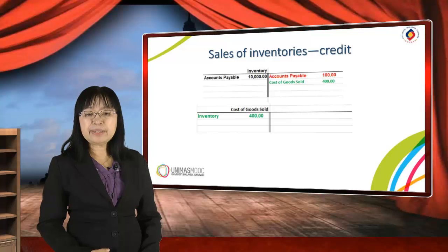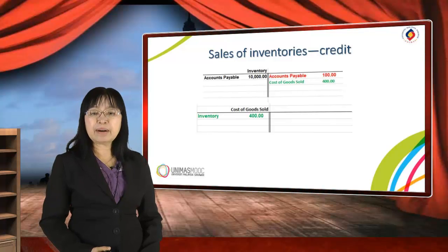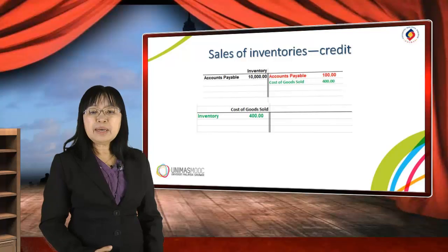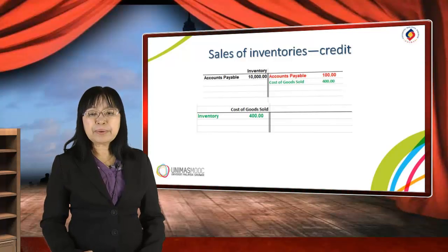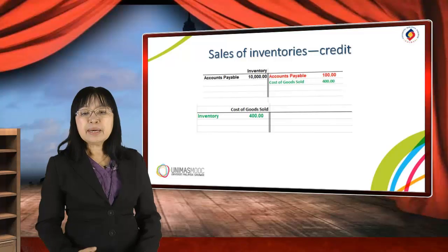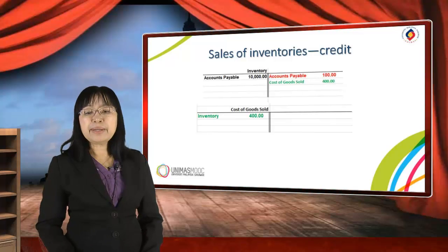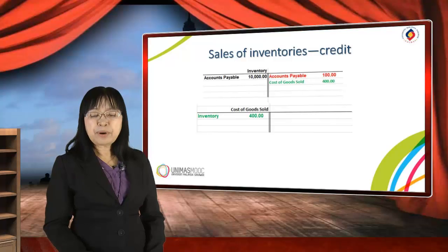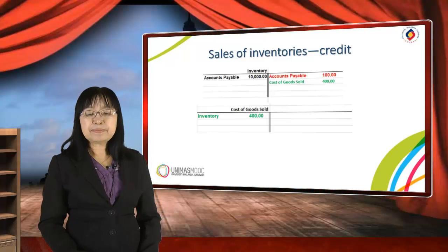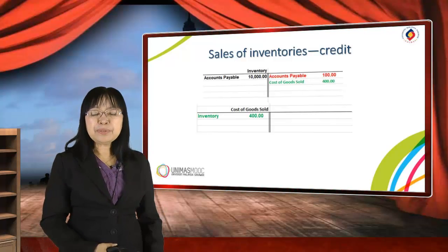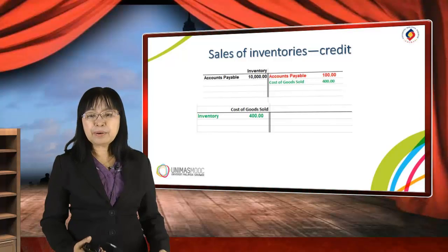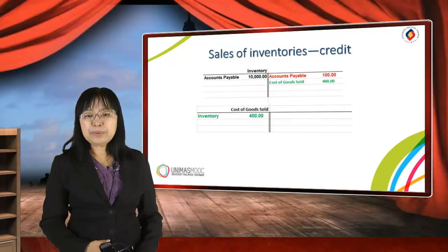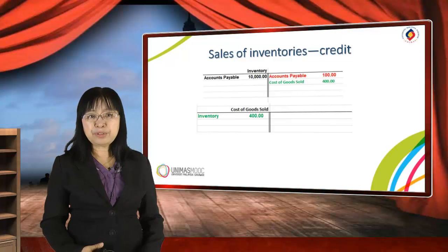Regarding the inventory account: since we sold goods on credit, the inventory account will be decreased by entering RM400 on the credit side. That amount will be debited in the cost of goods sold account at RM400. We use a perpetual inventory control system to record these transactions.